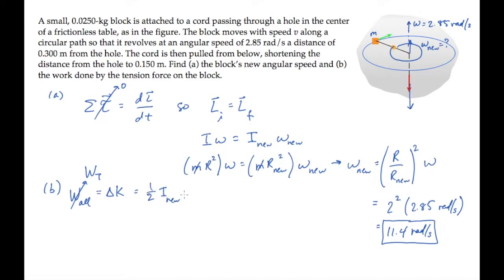One half I omega squared. Final or new values minus the initial values. We substitute mr squared for the moment of inertia and simplify the expression.